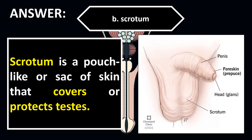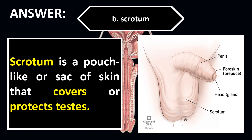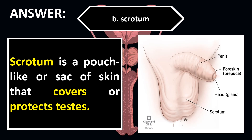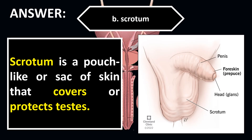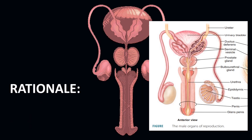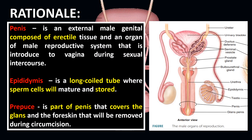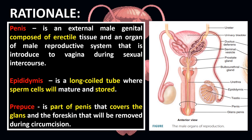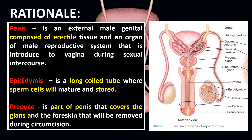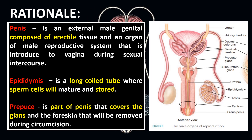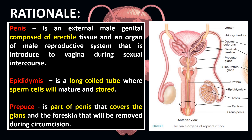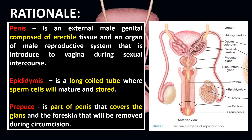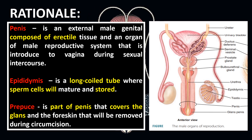The correct answer is letter B, Scrotum. Scrotum is a pouch-like or sack of skin that covers or protects the testes. Penis is an external male genital composed of erectile tissue and an organ of the male reproductive system that is introduced to the vagina during sexual intercourse. Epididymus is a long-coiled tube where sperm cells will mature and be stored. Prepuce is part of the penis that covers the glands and the foreskin that will be removed during circumcision.